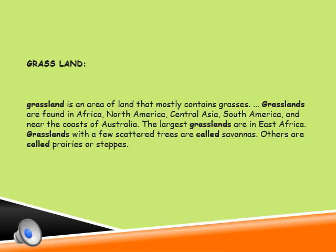Grasslands: areas that receive lesser rainfall have grasses growing between the trees. These areas with long and tall grasses covering wide stretches of land are called grasslands. Half the area of the world is covered by grassland. Grasslands are broadly classified into two types: tropical grasslands and temperate grasslands.